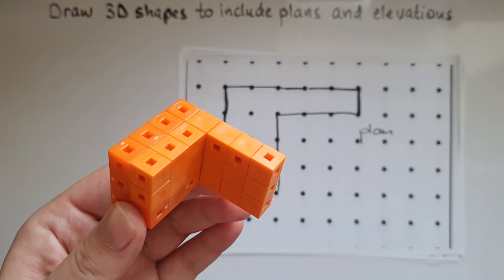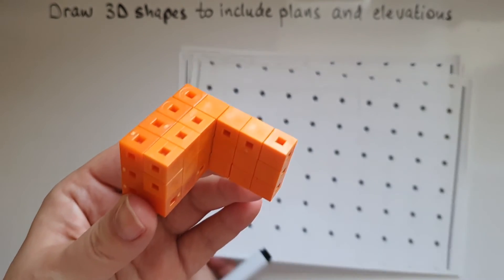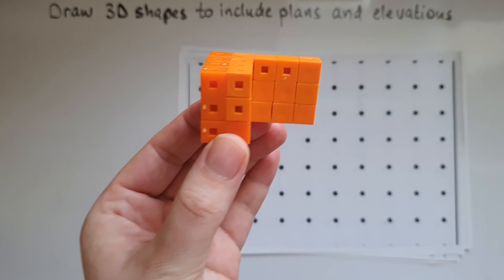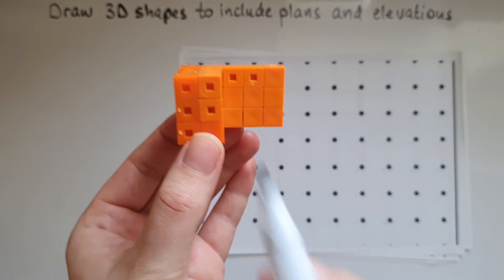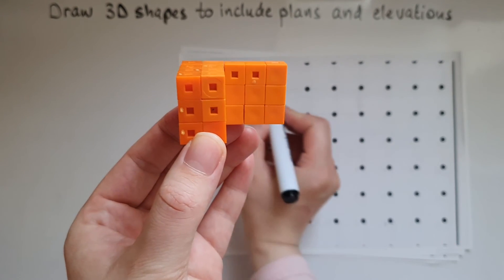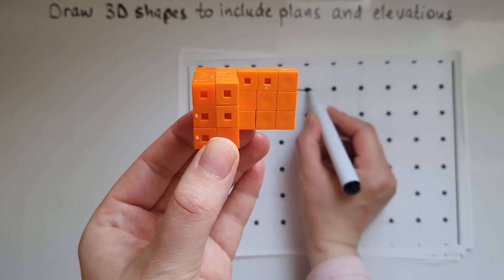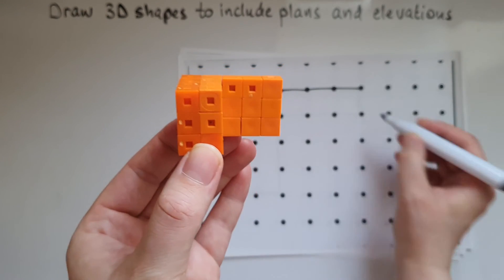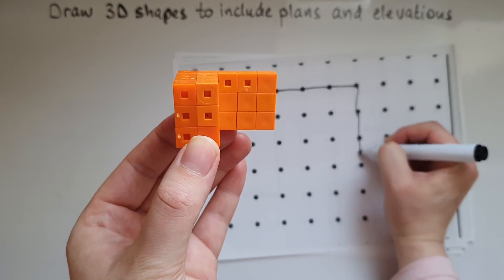Now the front elevation. This is what we can see. Five units going down by three across.